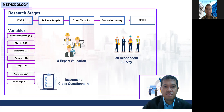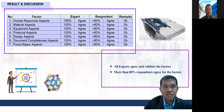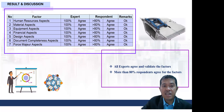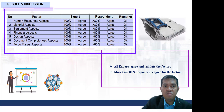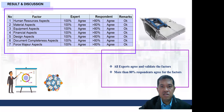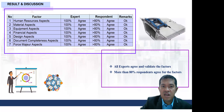In the results and discussion, for the human resource aspect, 100% of experts disagreed it should be excluded and more than 80% of respondents agreed — remark: OK. For material, 100% of experts agreed and more than 80% of respondents agreed — remark: OK. For equipment, 100% of experts agreed and 80% of respondents agreed — remark: OK. For the financial aspect, 100% of experts agreed and more than 80% of respondents agreed — remark: OK.